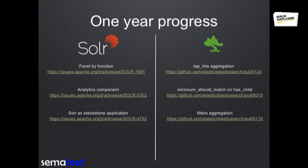We wanted to bring you back with a retrospection of what happened during that year between those two talks. So last year we talked about features coming in Solr: faceting by function, the analytics component, and Solr as a standalone application. Now, with the release candidate for Solr version 5.2 already in the works, all those things are active and we can use them with a stable release. On the Elasticsearch side, we said the top hits aggregation to enable field collapsing, and the minimum should match on has-child to allow matching documents based on the number of children hits, and the filters aggregation.